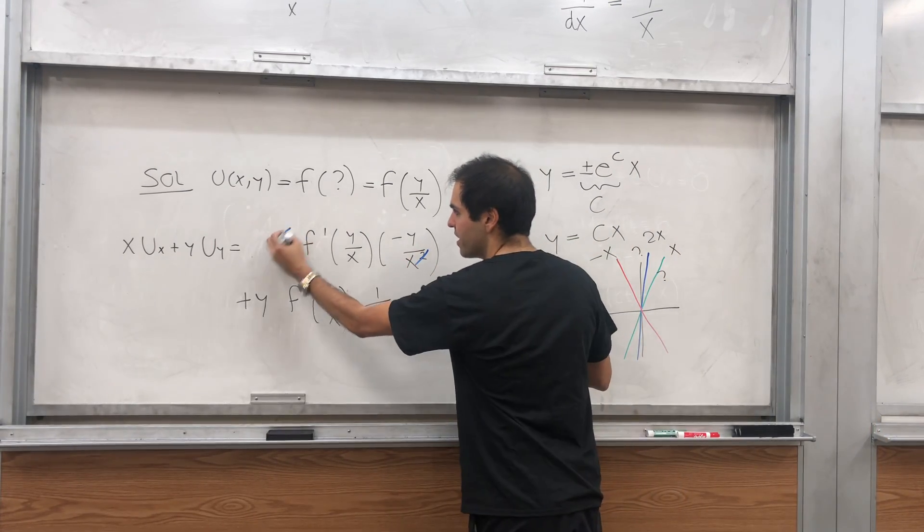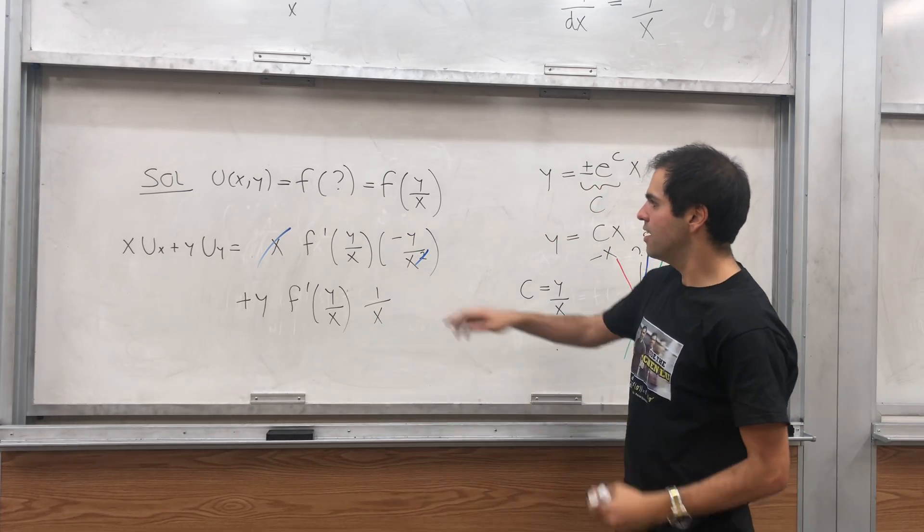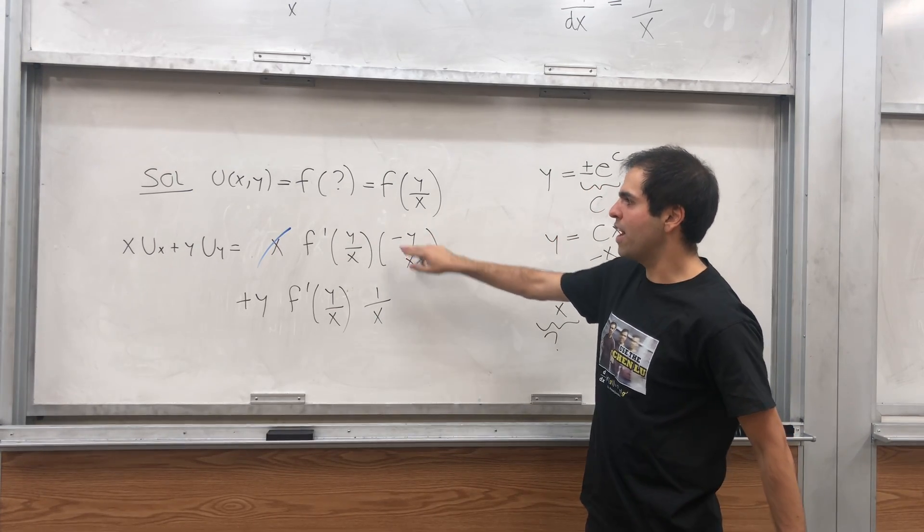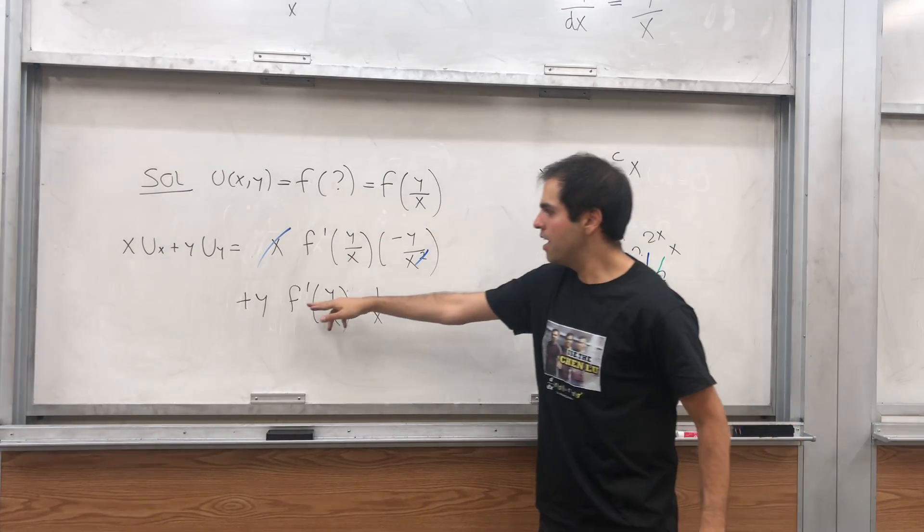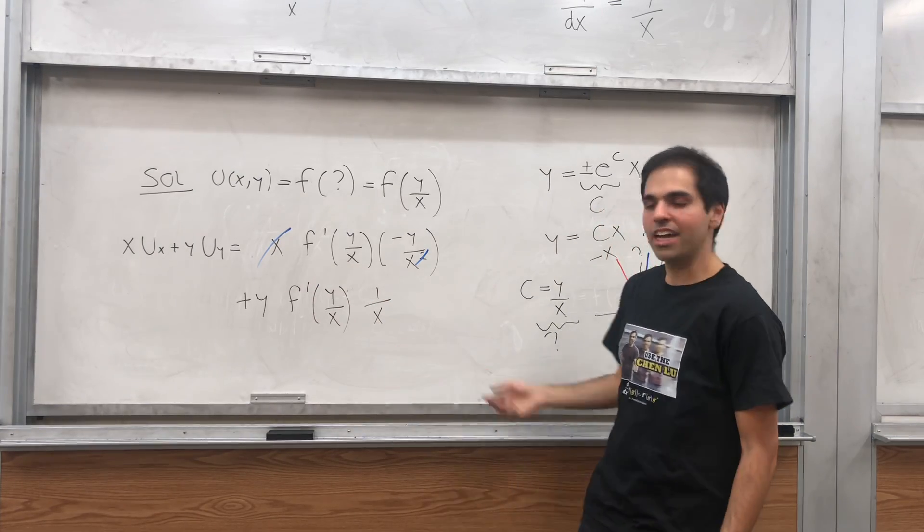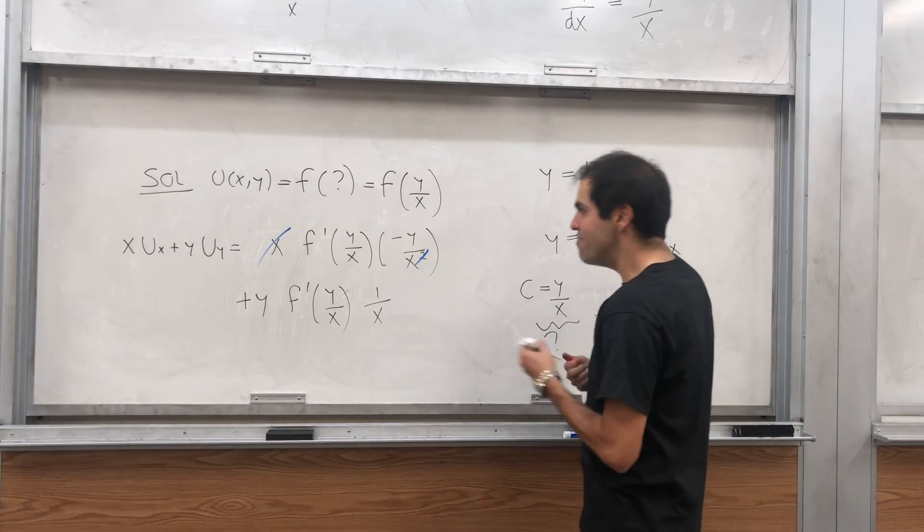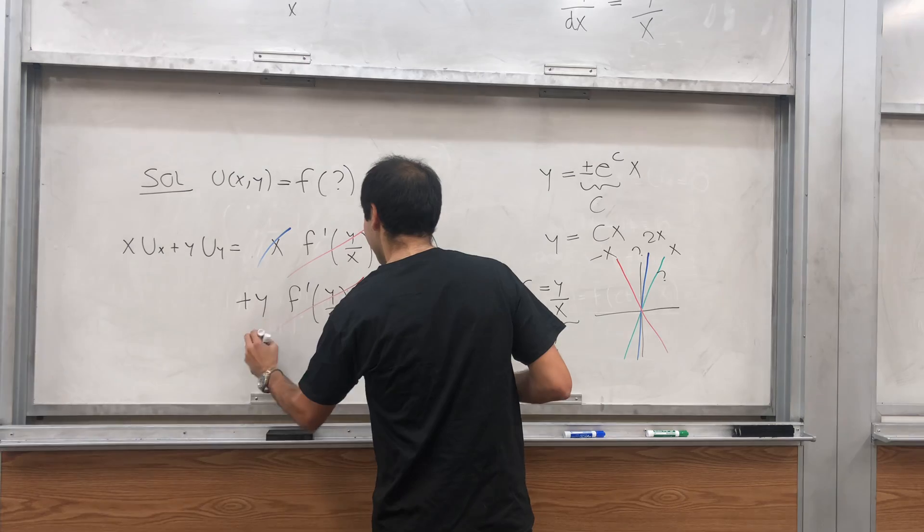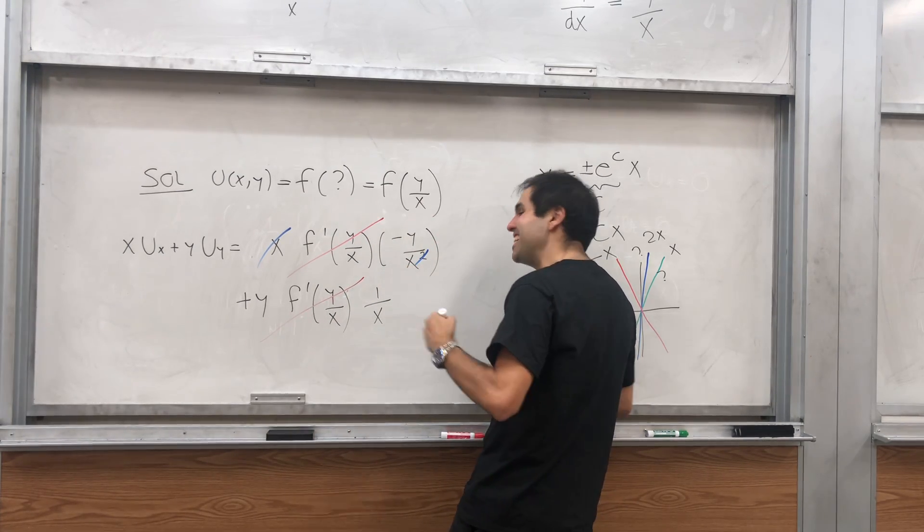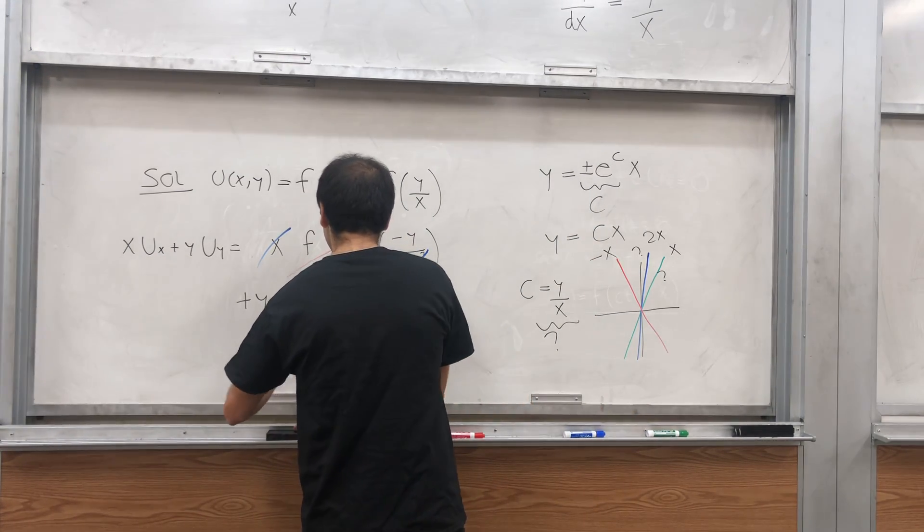And then, essentially, we get this simplification. Notice, this square here cancels out with this x, and we get minus y over x times f prime, and here, plus y over x times f prime. So magically, it cancels out. But again, it's not magic. It's directional derivatives.